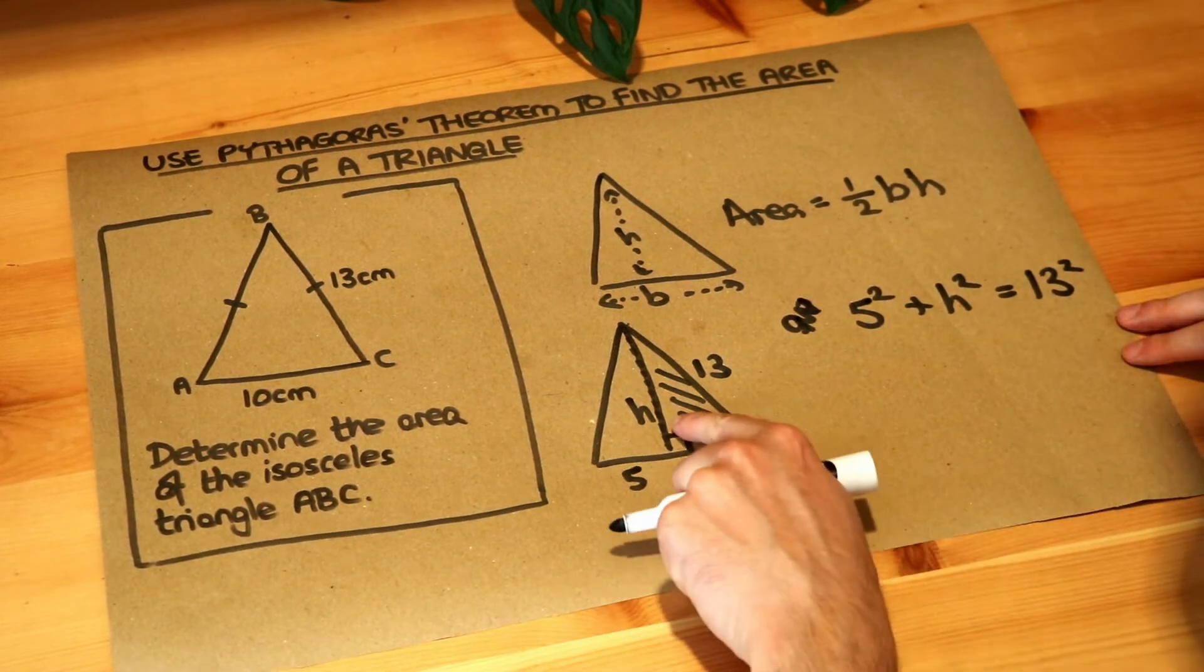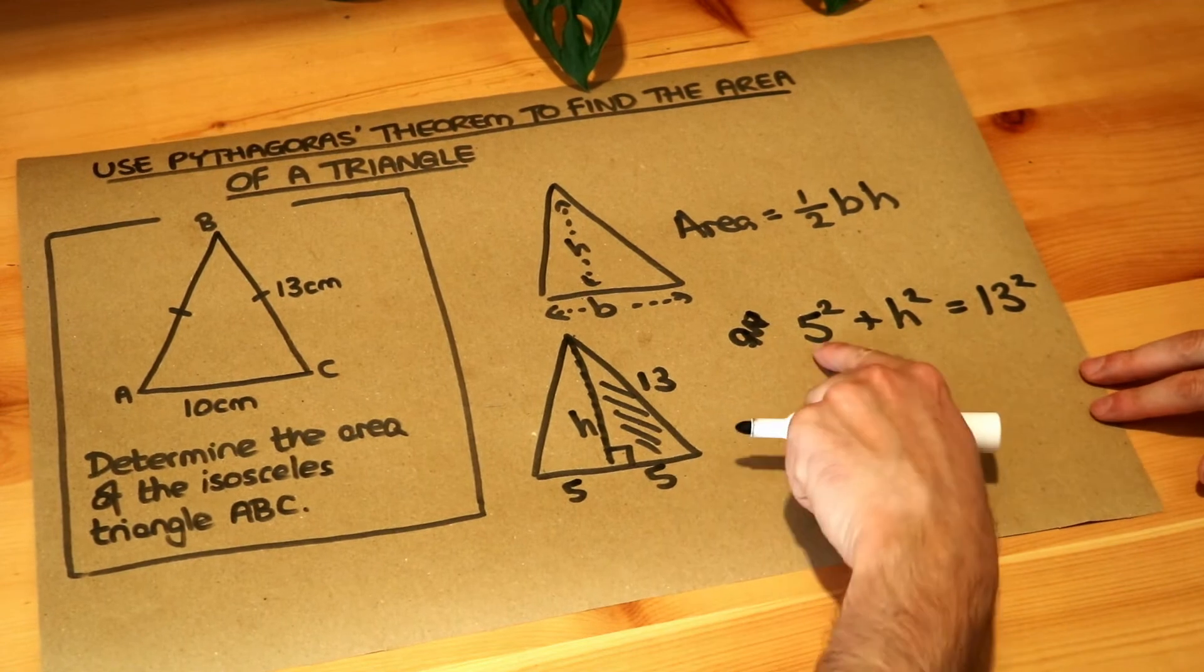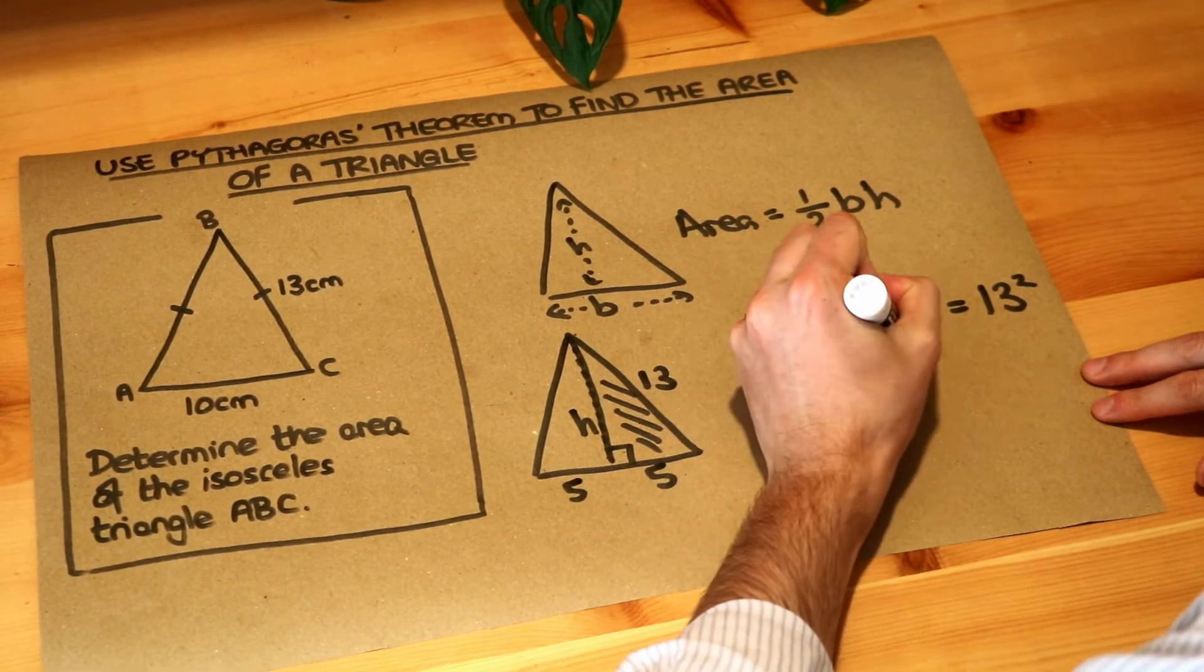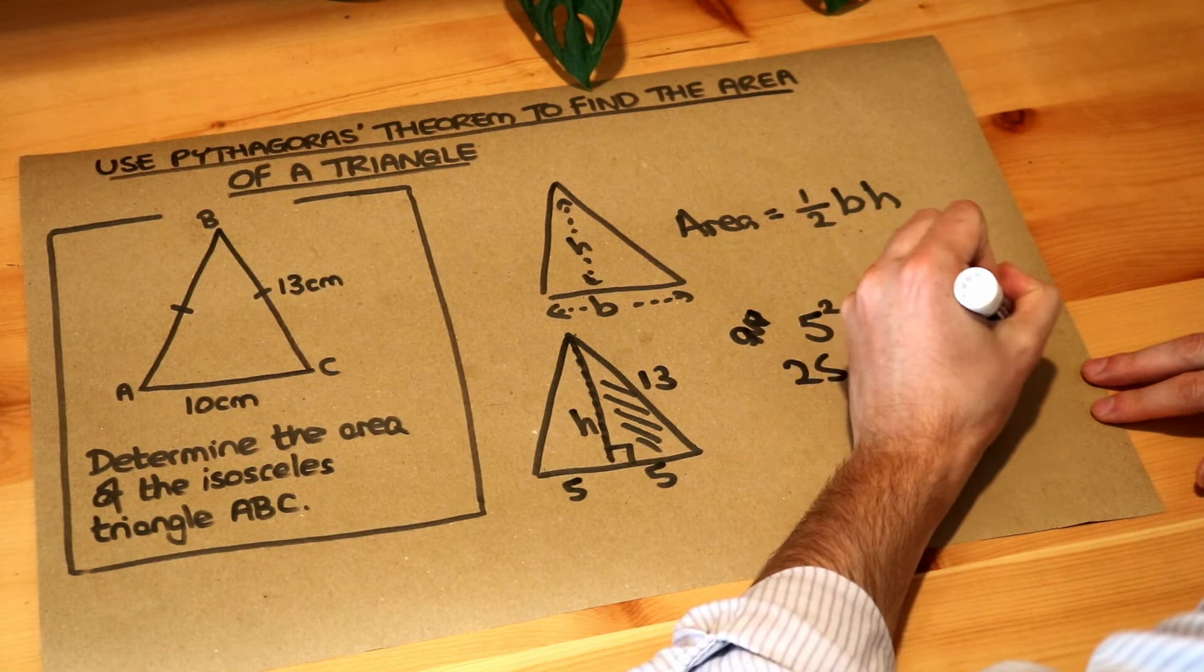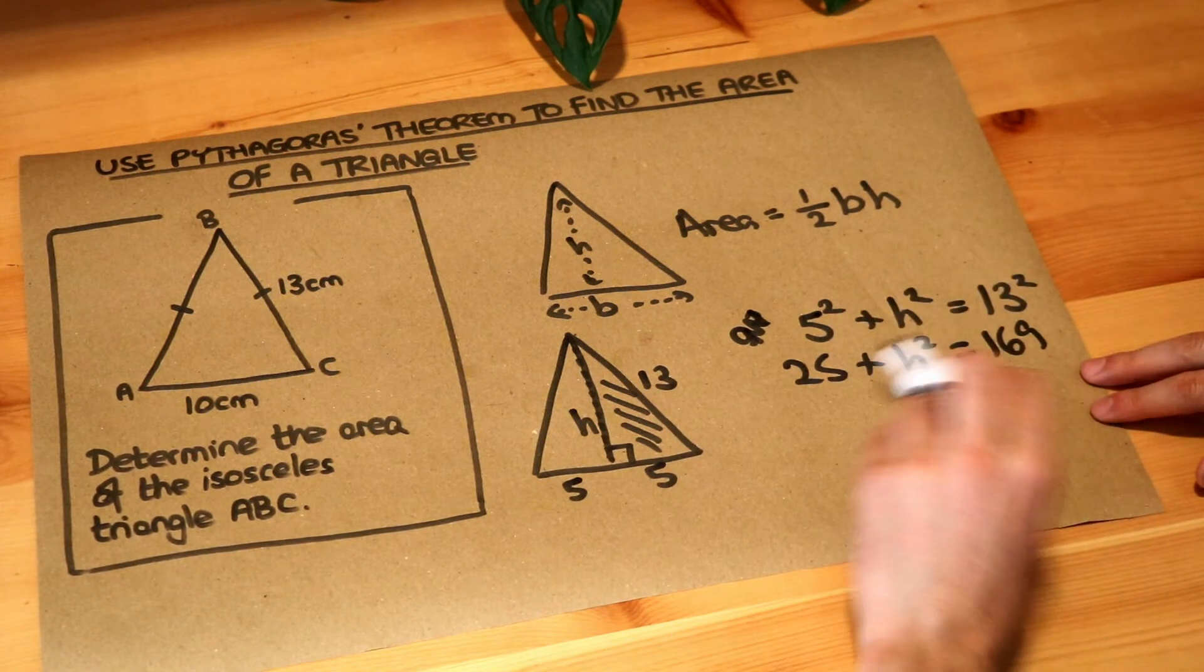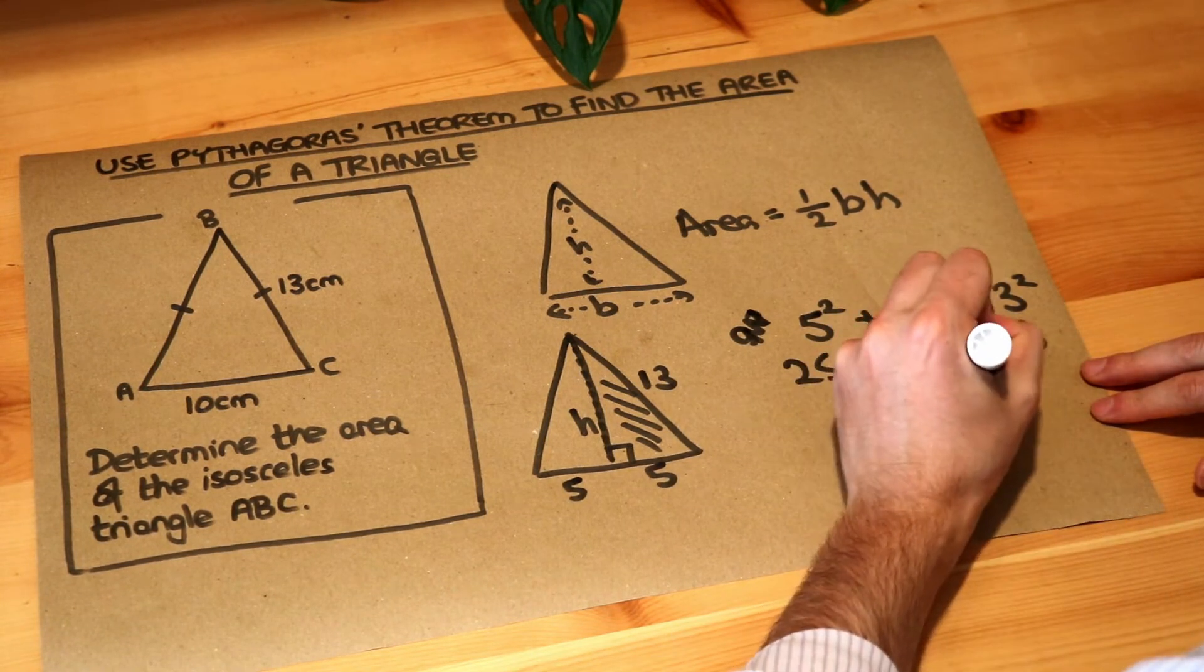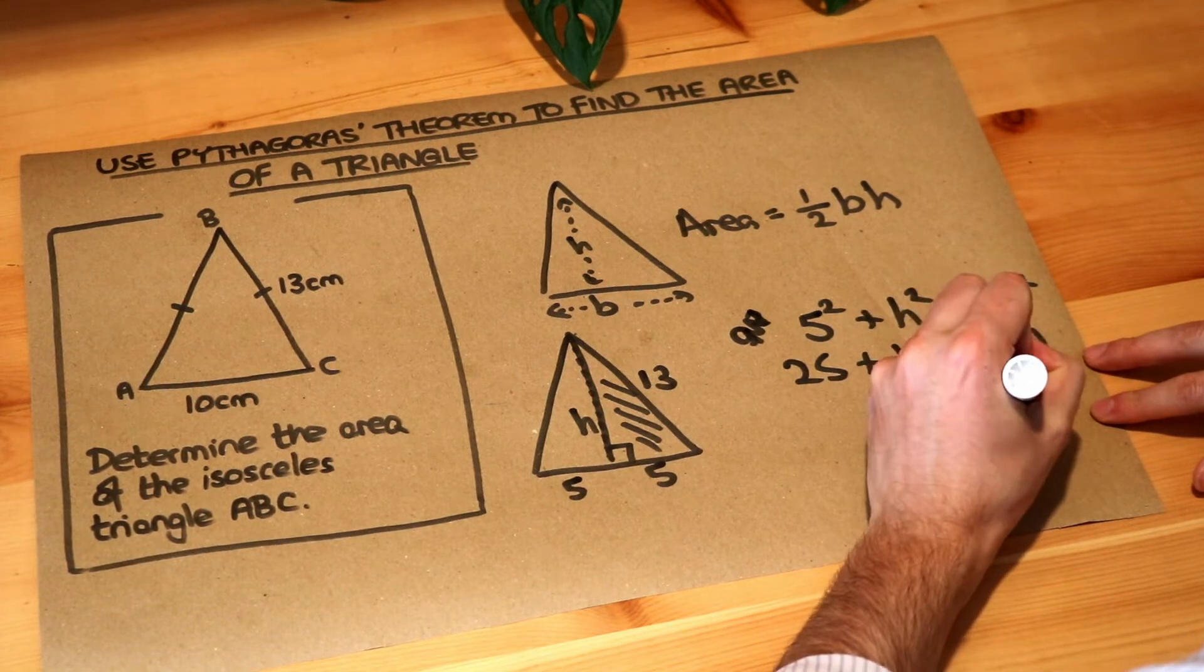We've used Pythagoras on this triangle: 25 plus H squared equals 169. Subtract 25 from both sides, then square root both sides to get 12.